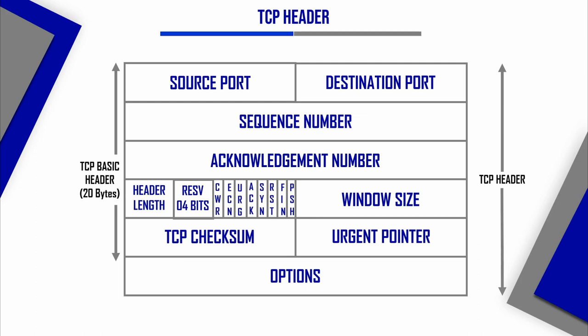The TCP header has different fields: source port, destination port, sequence number, acknowledgement number, header length, 4 reserved bytes, then CWR (Congestion Window Reduced), ECN (Explicit Congestion Notification), urgent flag, acknowledgement flag, SYN flag, reset flag, FIN flag, and push flag — so there are eight flags in the TCP header. We also have window size, TCP checksum, urgent pointer, and an options field. By default, without the options field, the minimum TCP header size is 20 bytes.